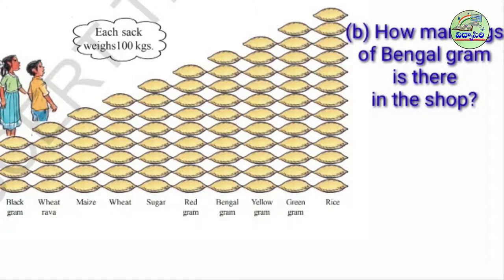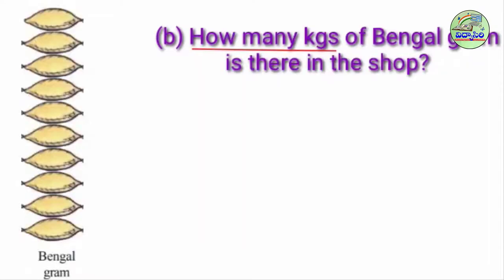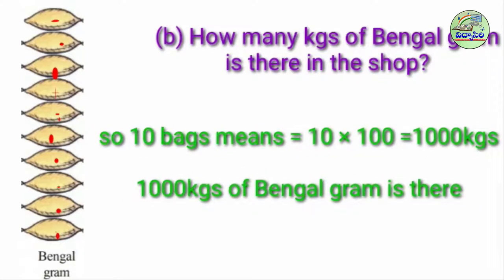Next, question B: How many kgs of bengal gram is there in the shop? Where is bengal gram? This is bengal gram. We have to find how many kgs, so first we count the bags: 1, 2, 3, 4, 5, 6, 7, 8, 9, 10. 10 bags means 10 into 100 = 1,000 kgs. 1,000 kgs of bengal gram is there.